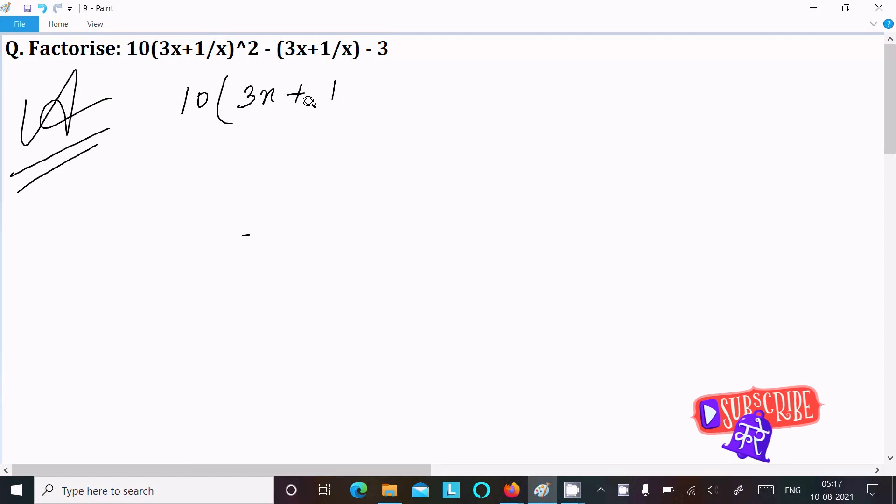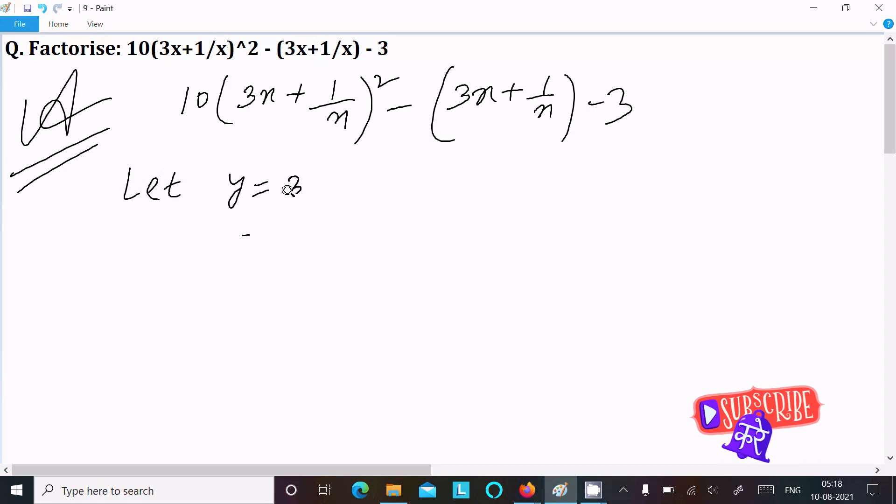10(3x + 1/x)² - (3x + 1/x) - 3. We can easily achieve the output if I assume y equal to 3x + 1/x.